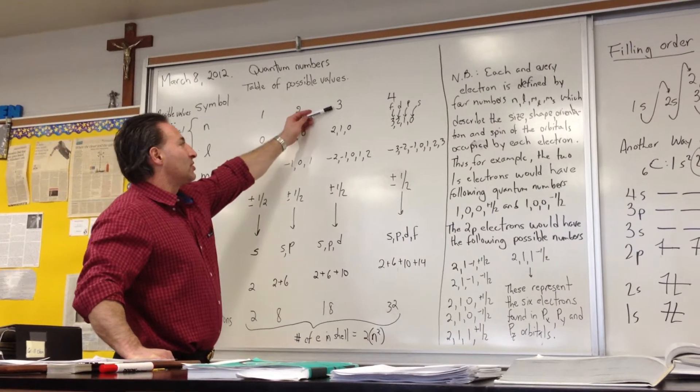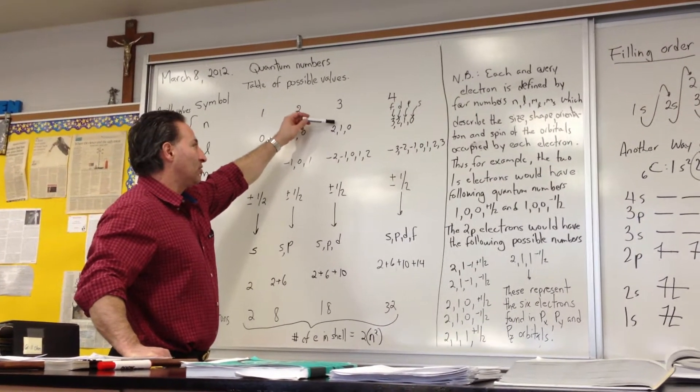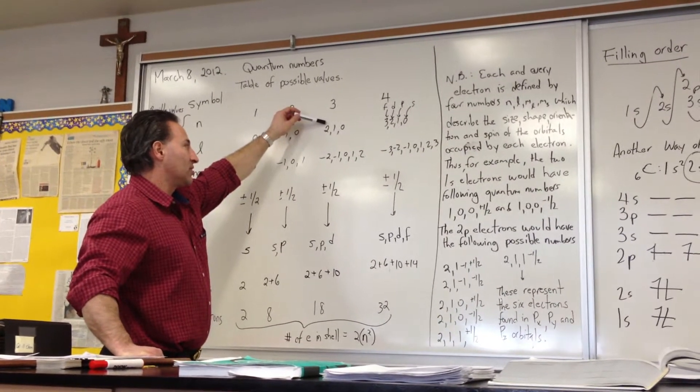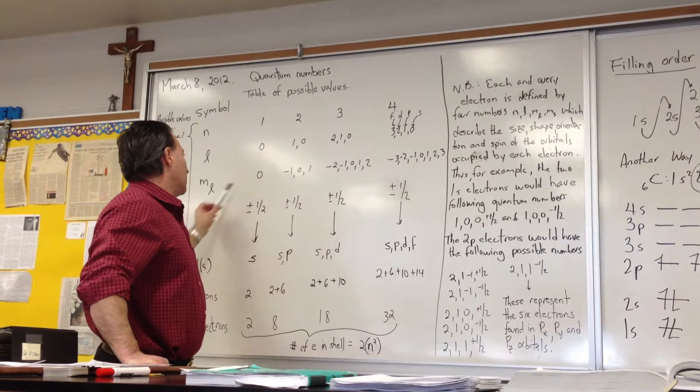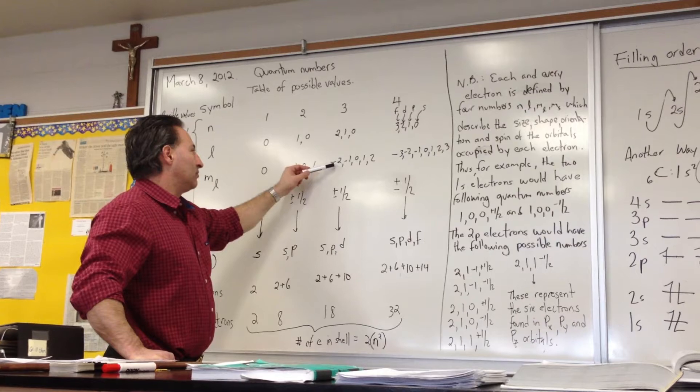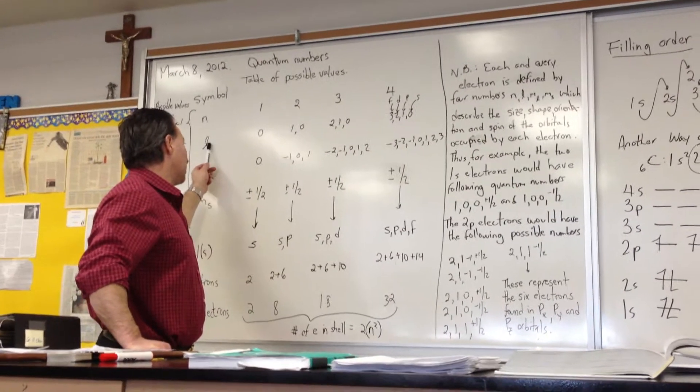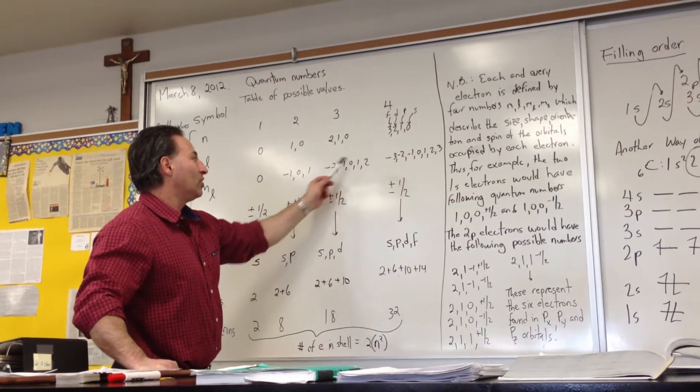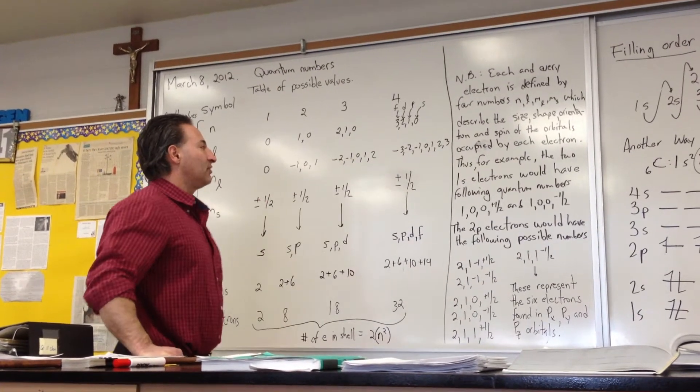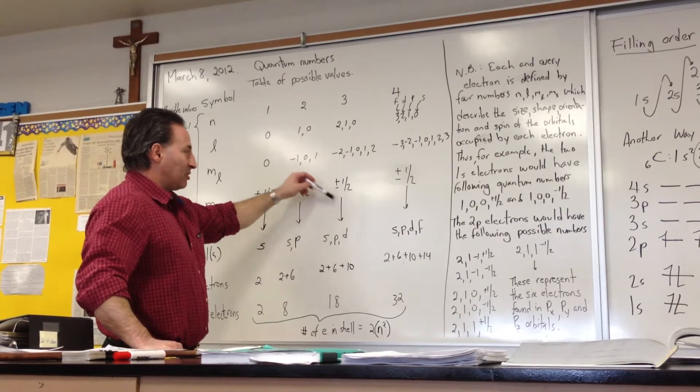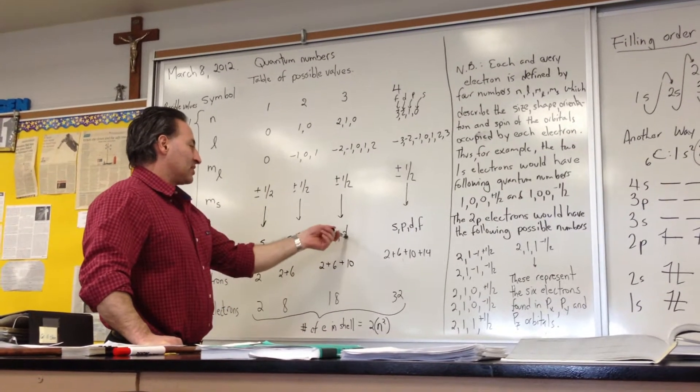If the principal quantum number is three, the value of the azimuthal can be two, one, or zero. Two corresponds to d orbitals. The magnetic can be, again, the value of the magnetic is plus or minus l. So m sub l can be minus two, minus one, zero, one, or two. That gives rise to five different orbitals, each of which can contain the two electrons that are spin paired. And that gives us the d orbitals.